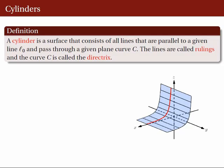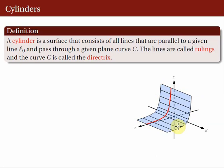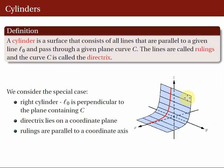The lines are called rulings and the curve C is called the directrix. In this figure, consider this red curve as the given plane curve C, or the directrix, and let's consider the y-axis as the fixed line L0. A cylinder consists of all lines parallel to L0 or parallel to the y-axis that pass through the given plane curve C. The parallel lines are called the rulings, and some of these rulings are represented by the black lines. If we collect all the rulings, then we form the cylinder, which is this blue surface.